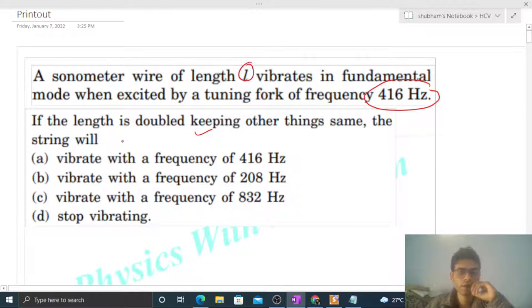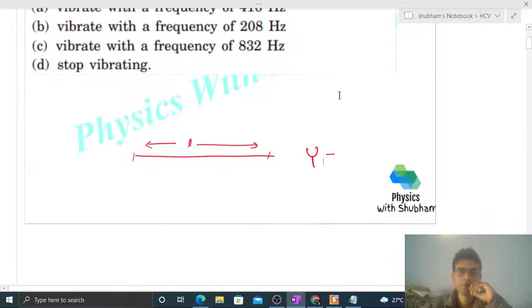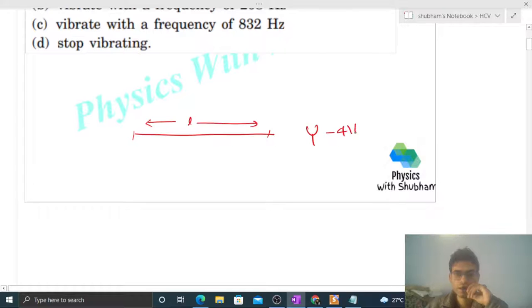So let's say we have a sonometer wire and its length is l, and we have a tuning fork and this tuning fork's frequency is 416 hertz, right?